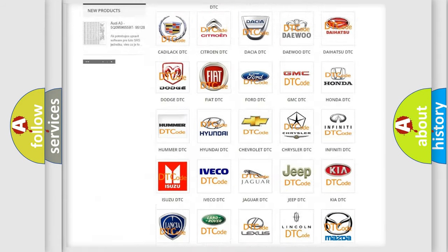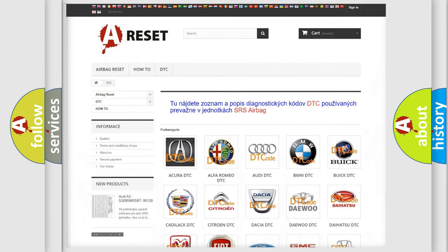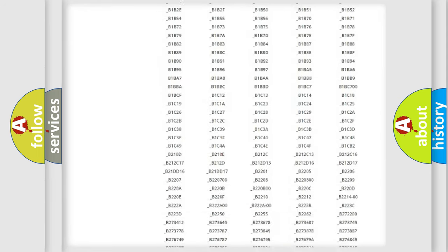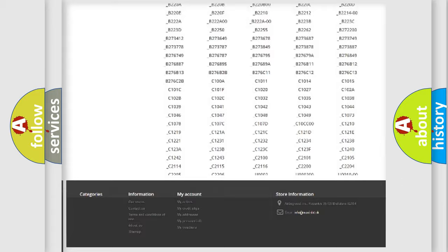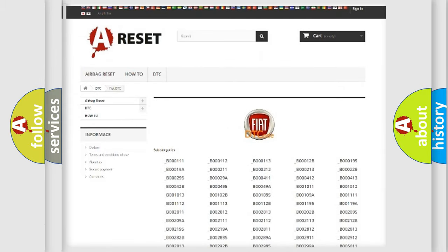Our website airbagreset.sk produces useful videos for you. You do not have to go through the OBD2 protocol anymore to know how to troubleshoot any car breakdown. You will find all the diagnostic codes that can be diagnosed in FIAT vehicles, and many other useful things.